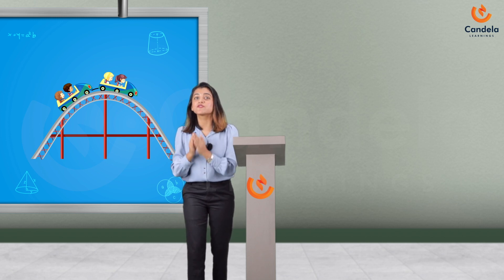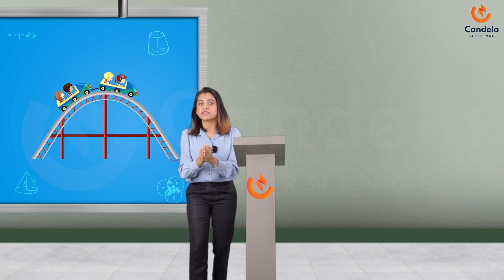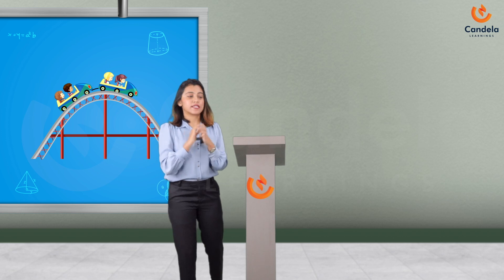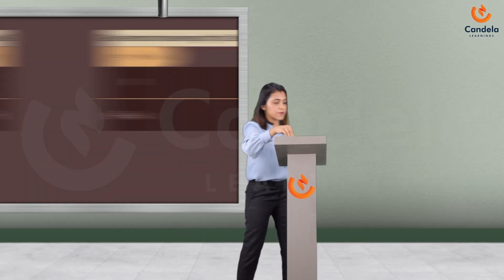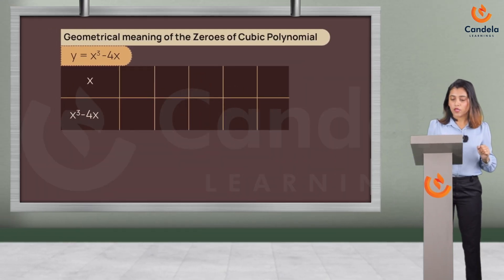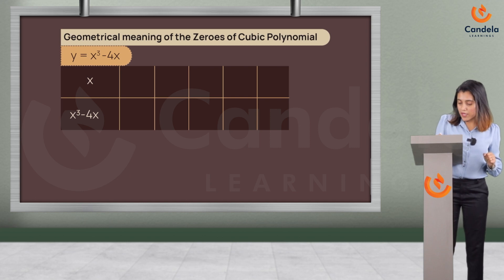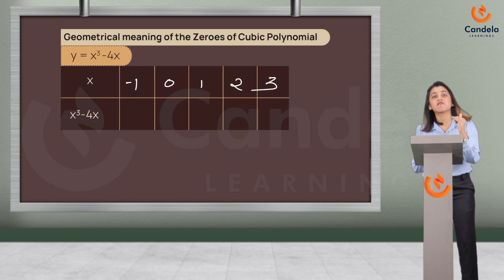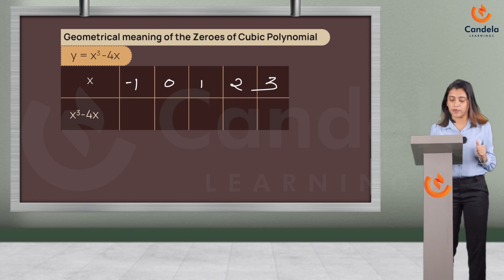And here we are going to check the pattern for a cubic polynomial. Let's take the example x³ minus 4x. Let's put some random values for x: minus 1, 0, 1, 2, 3. And we are going to check the corresponding value of y.